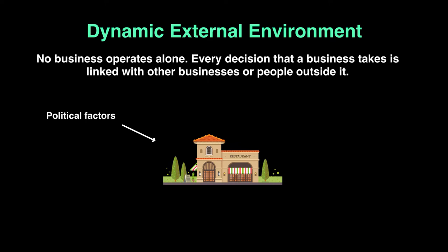The P in PEST stands for political factors. If the government decides to charge a higher tax on sales, it's not in the restaurant's hands — they have to abide by the government's rules and charge customers a higher price. Customers may then buy less of your product. Another example: the government may require stricter food quality standards with more frequent food inspector visits, meaning you'd need to hire more people to ensure food is fresh, inventory is ordered daily, and the place is kept clean. More expenses, but also better quality guaranteed for customers — so political factors can have both positive and negative impacts.